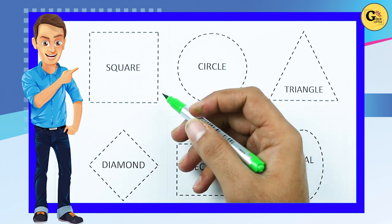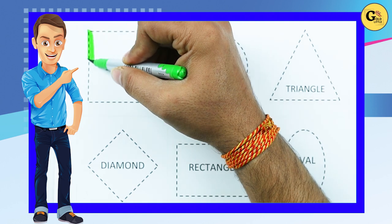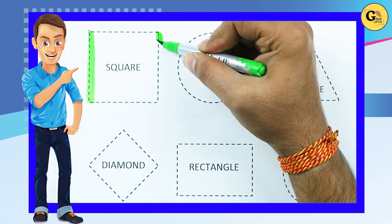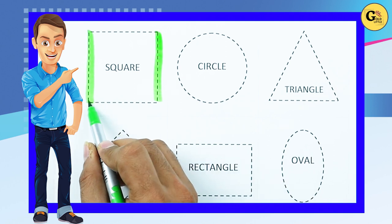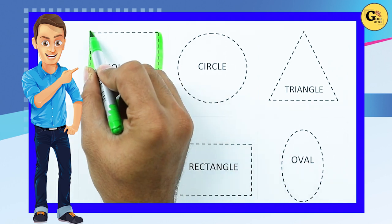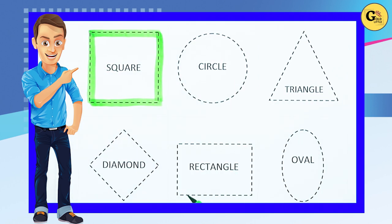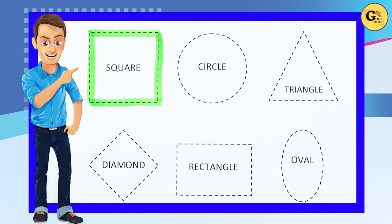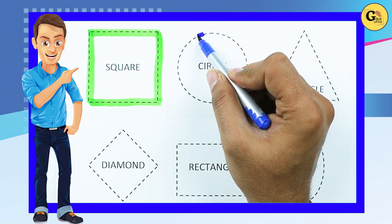It's square. One line, two line, three line, four line, two slipping line, two standing line. It's called square with green color.